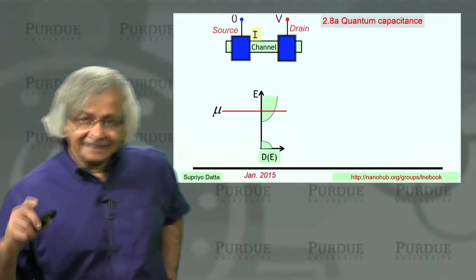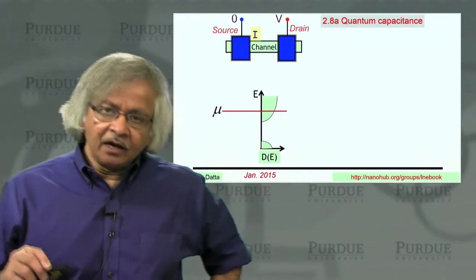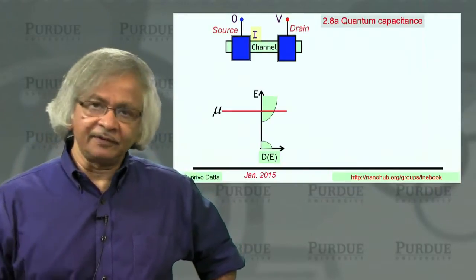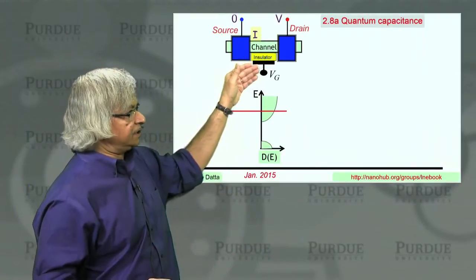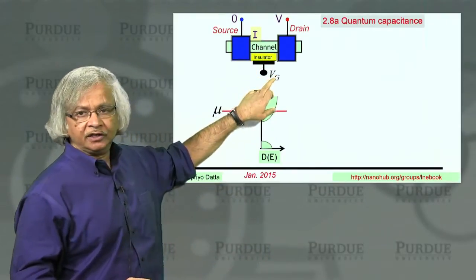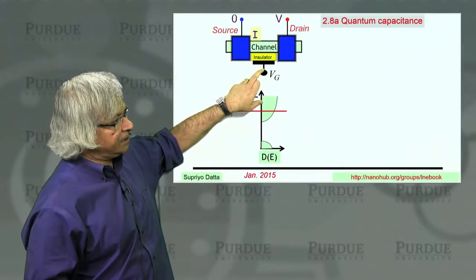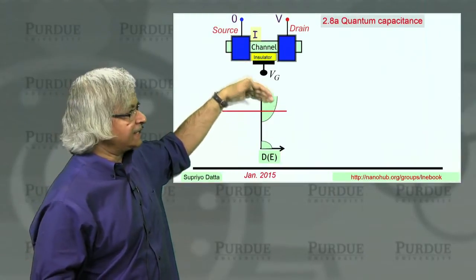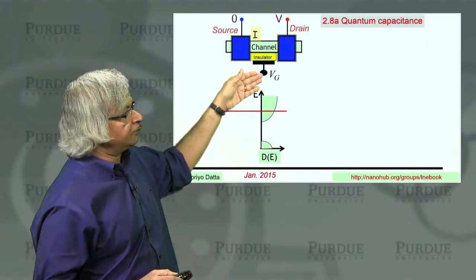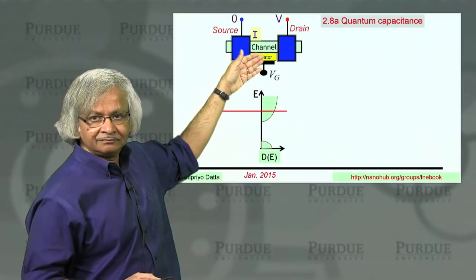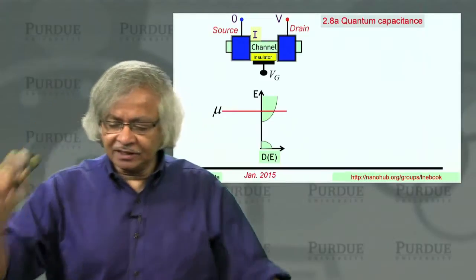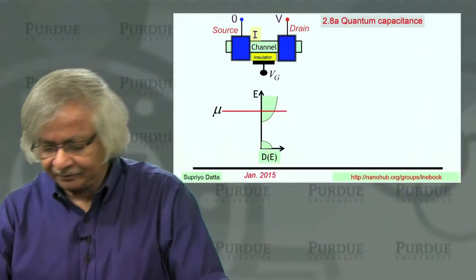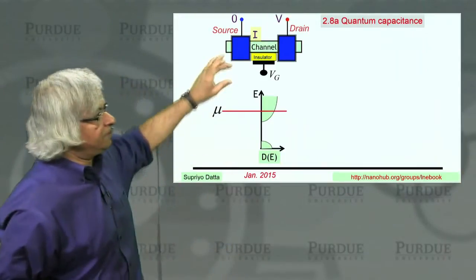What we want to talk about in this lecture is how you can control the conduction through a channel. That's the essence of a transistor. In a transistor, there's a third terminal with a gate voltage V_g, and this terminal is actually separated from the channel through an insulator. So ideally, no current should be flowing at this terminal. In practice, insulators are often quite thin and there's some leakage current, but that's undesirable. Ideally, there shouldn't be any current there.